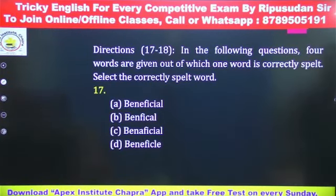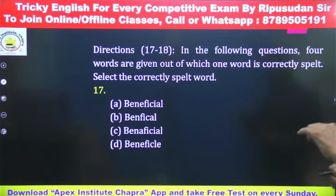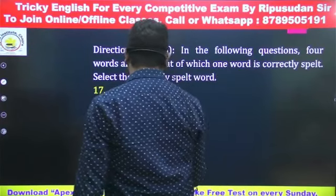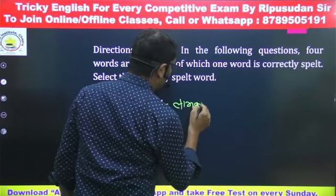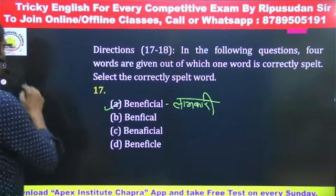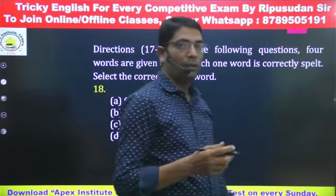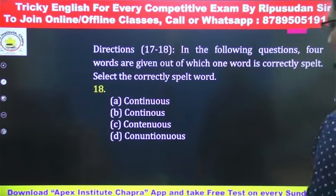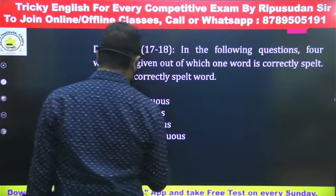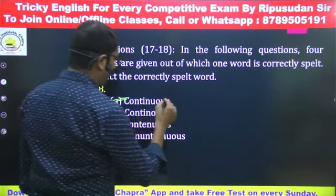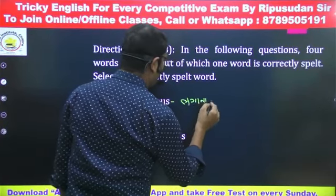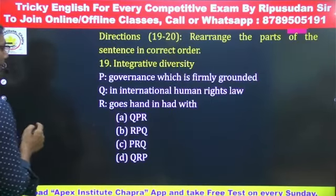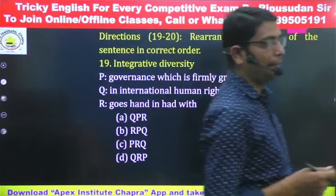Question number 17: Correctly spelled word चुनना है — answer A होगा, 'beneficial'। Beneficial means लाभकारी, लाभदायक। Question number 18: Comment करिए — शब्द है 'continuous'। Continuous means लगातार। Q18 का answer 'continuous' होगा।